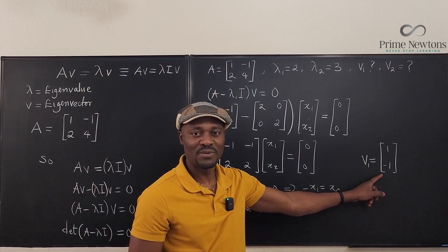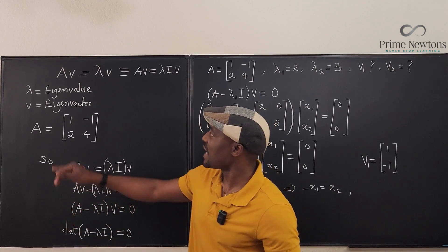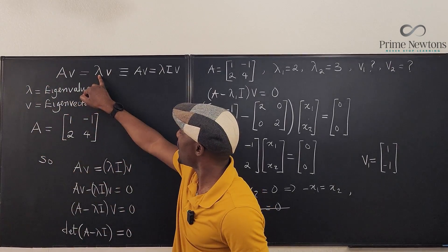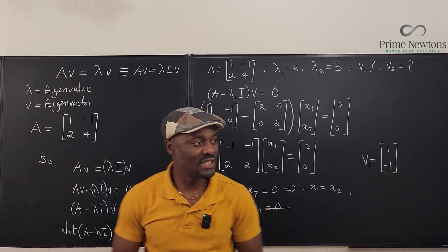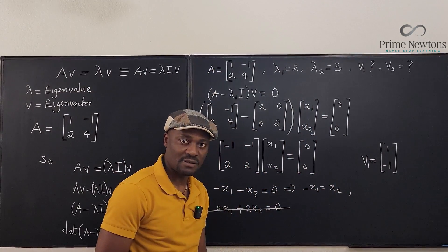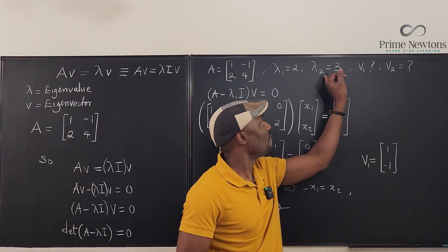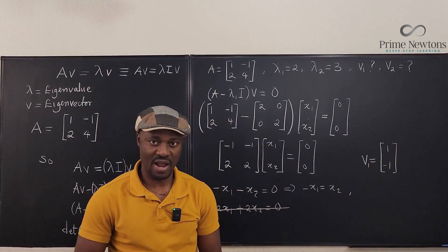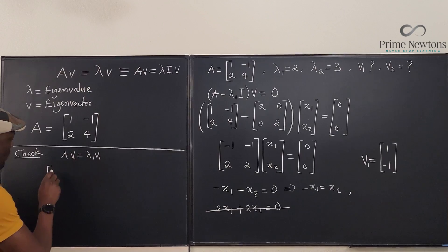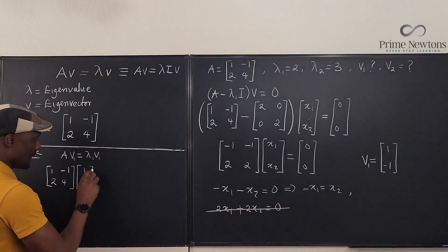I'll leave the second eigenvector for you to find, but let me verify that v₁ is correct. The claim is that multiplying a matrix by its eigenvector gives the same result as multiplying that eigenvector by just the scalar eigenvalue. We'll check: A·v₁ should equal λ₁·v₁, i.e., the matrix times [1; -1] should equal 2 times [1; -1].